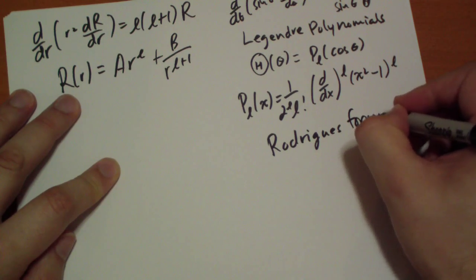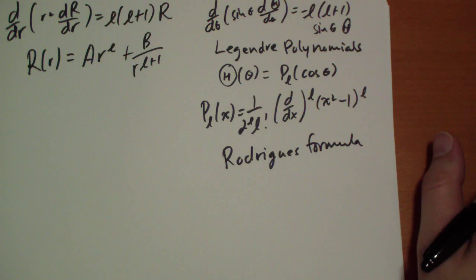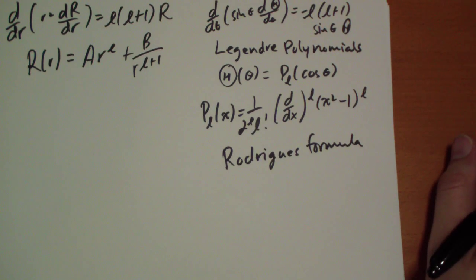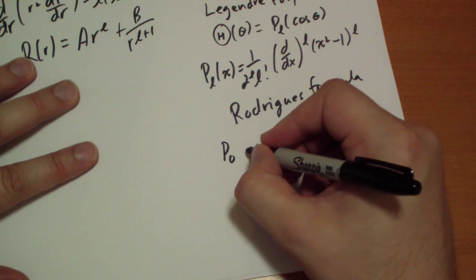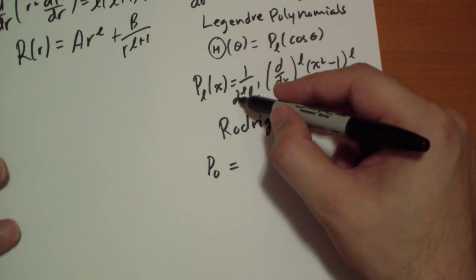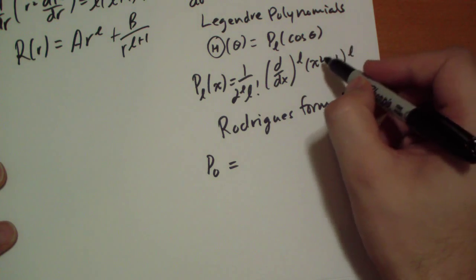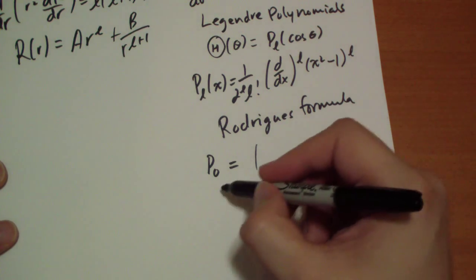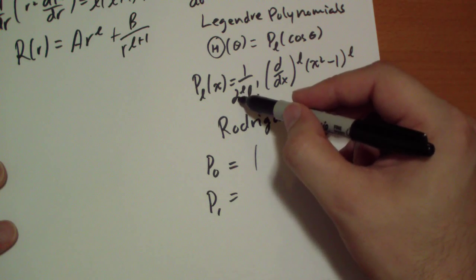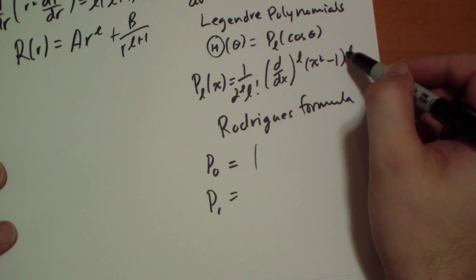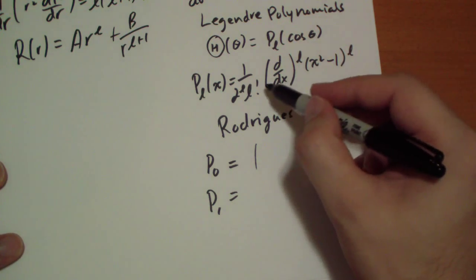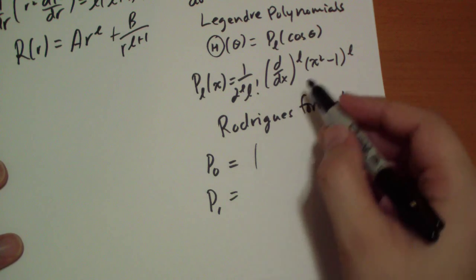Okay? And I encourage you to calculate the first few yourself just so you know what they look like. In practice, if you're given simple enough problems, you won't have to know more than a couple. Let's just write out a couple. So, P_0 is equal to, let's see, 1 over 2 to the 0, which is 1, 0 factorial is 1, the 0-th derivative of x squared minus 1 to the 0. So it's just 1. P_1 is 1 over 2 to the first power times 1 times the first derivative of x squared minus 1 to the 1. So it's just 1 half of 2x, derivative of x squared is 2x, so it's just x.